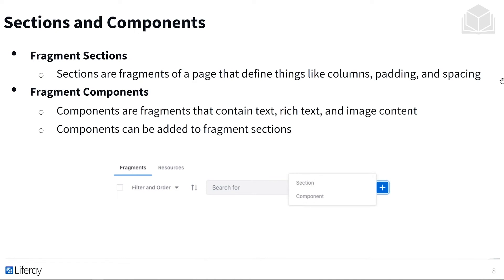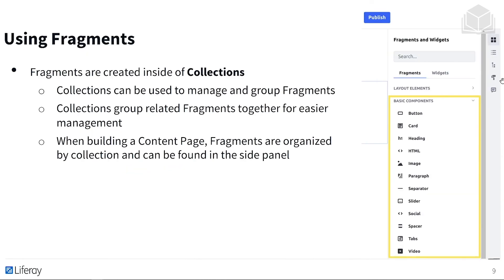Sections are fragments of a page that define things like column, padding, and spacing — they provide structure to the page. Then we have fragment components, which contain text, rich text, and image content, and components are added to the fragment sections. You can think of sections as a framework and components as the items housed within that framework. Down here on the right, when creating a new fragment for the first time, you have the option to create either a section or a component.